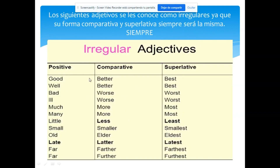En resumen chicos, como hemos visto: para comparativos se agrega -er, y para superlativos se agrega -est. Ya sabemos también que a los adjetivos largos se les coloca MORE en comparativo y MOST en superlativo.